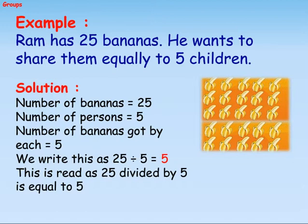Example: Ram has 25 bananas. He wants to share them equally to 5 children. Solution: Number of bananas equals 25, number of persons equals 5, number of bananas got by each equals 5. We write this as 25 divided by 5 equals 5. This is read as 25 divided by 5 is equal to 5.